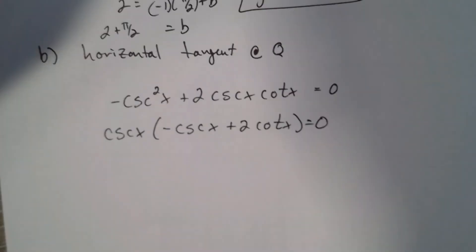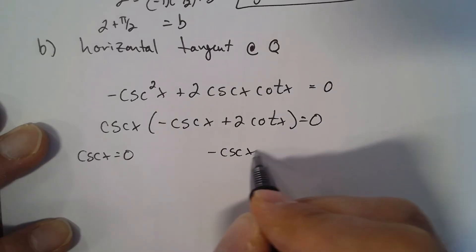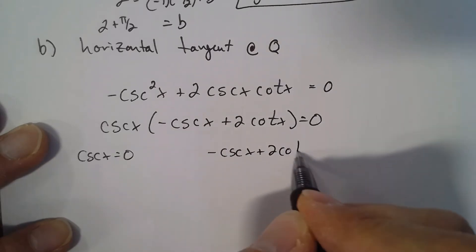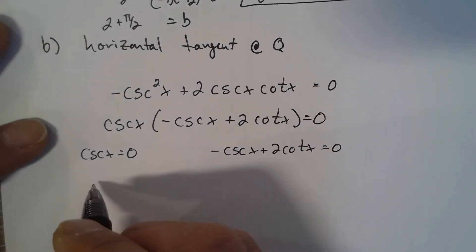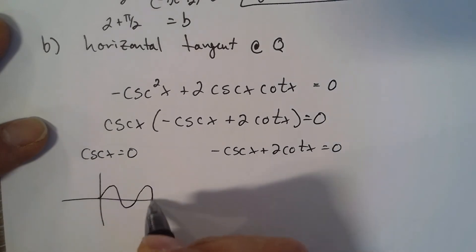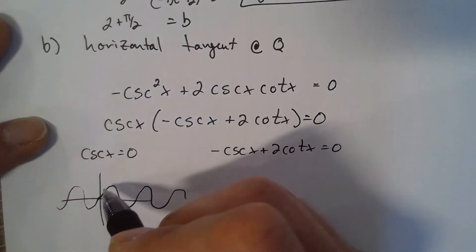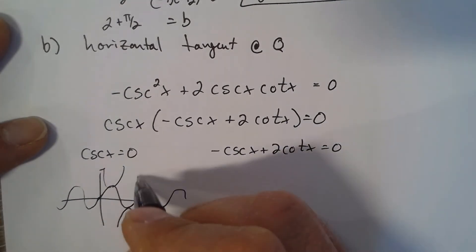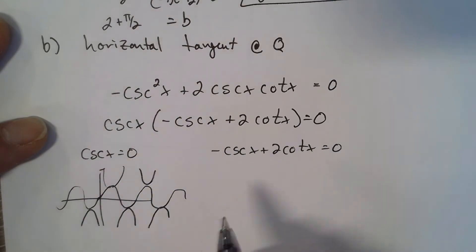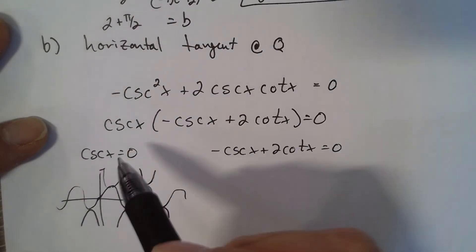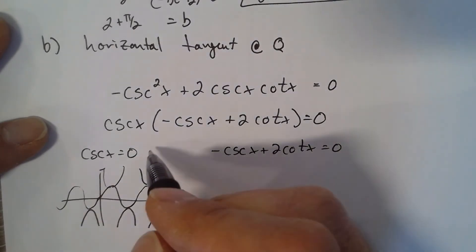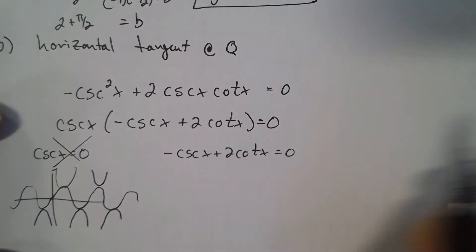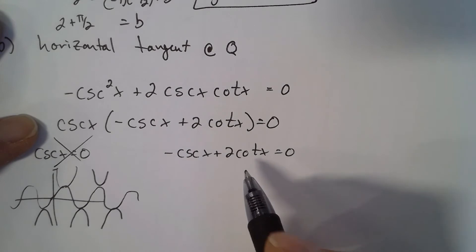Setting each factor equal to 0: cosecant x = 0 has no solution, because the cosecant curve is always 1 or greater, or negative 1 or less — it never reaches 0. So there's no solution from that factor. We move on to solving negative cosecant x + 2 cotangent x = 0.